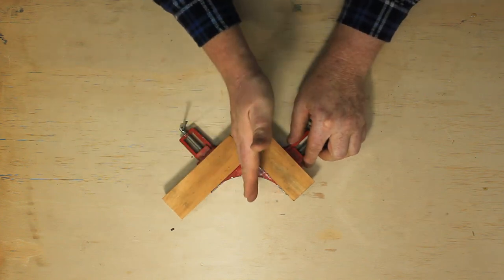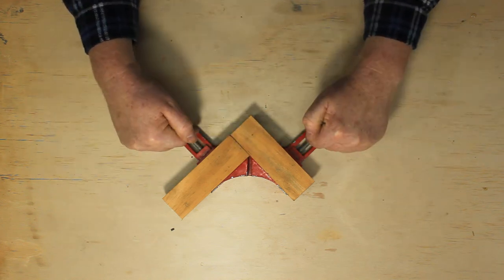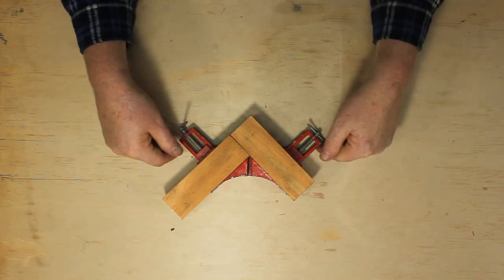Normally where you're cutting a mitre joint, so where you're joining together picture frames. In that case you'd normally have a set of four of these. I only have one.